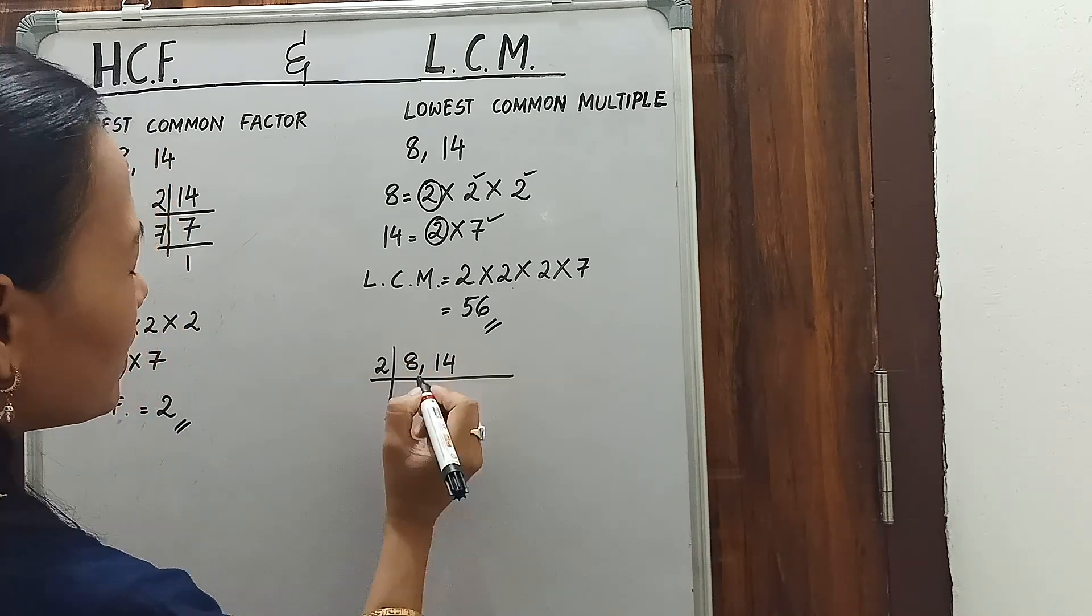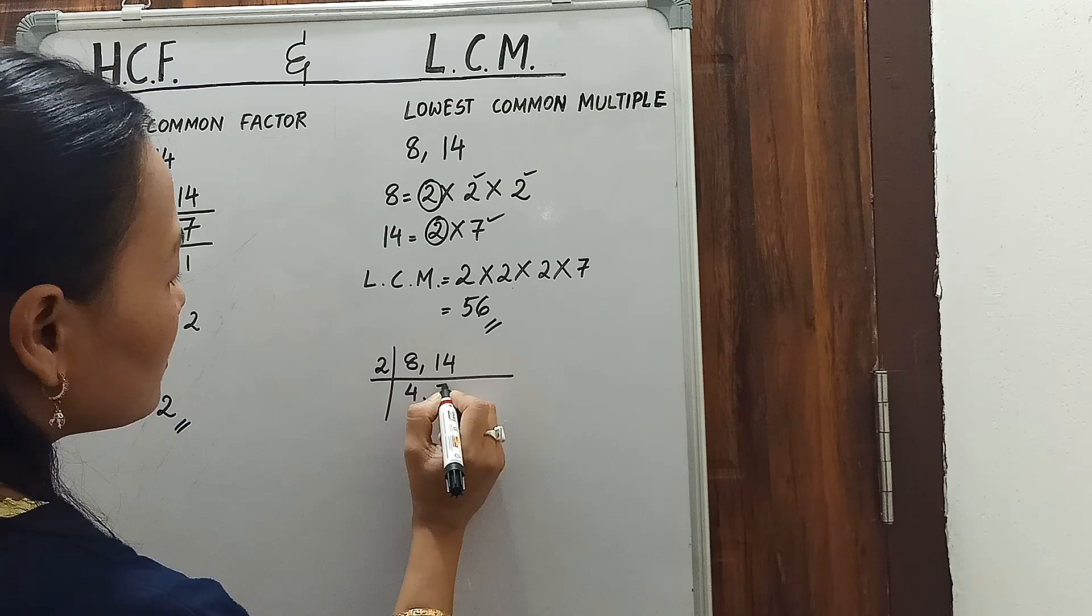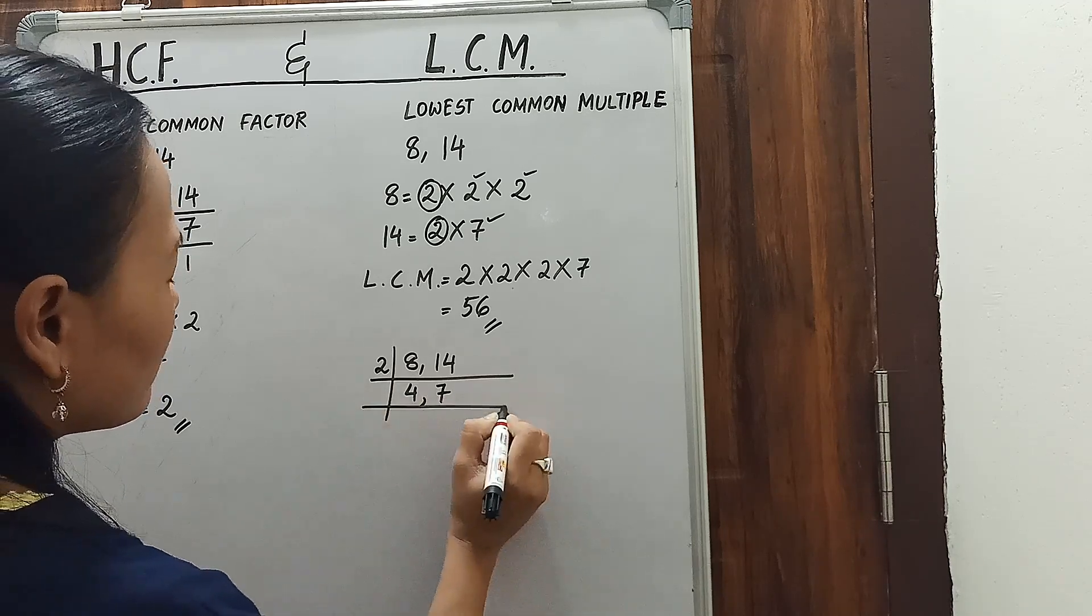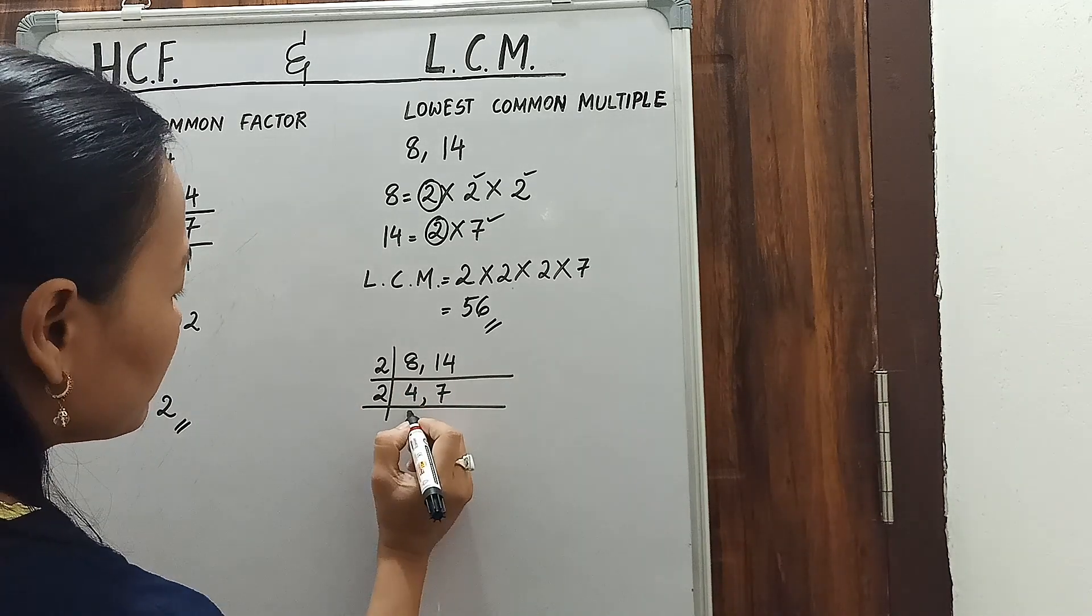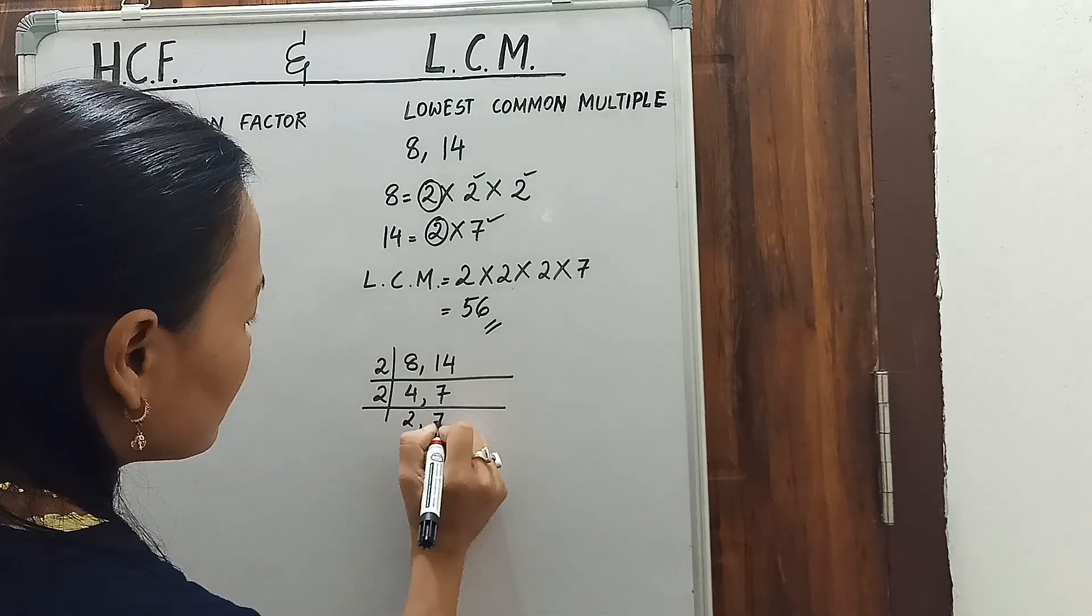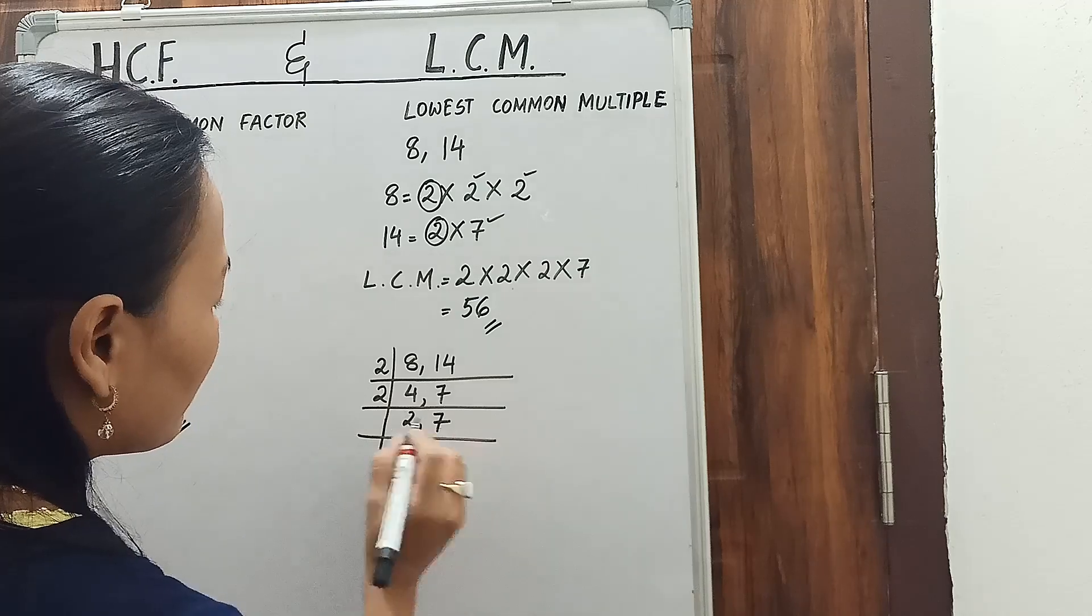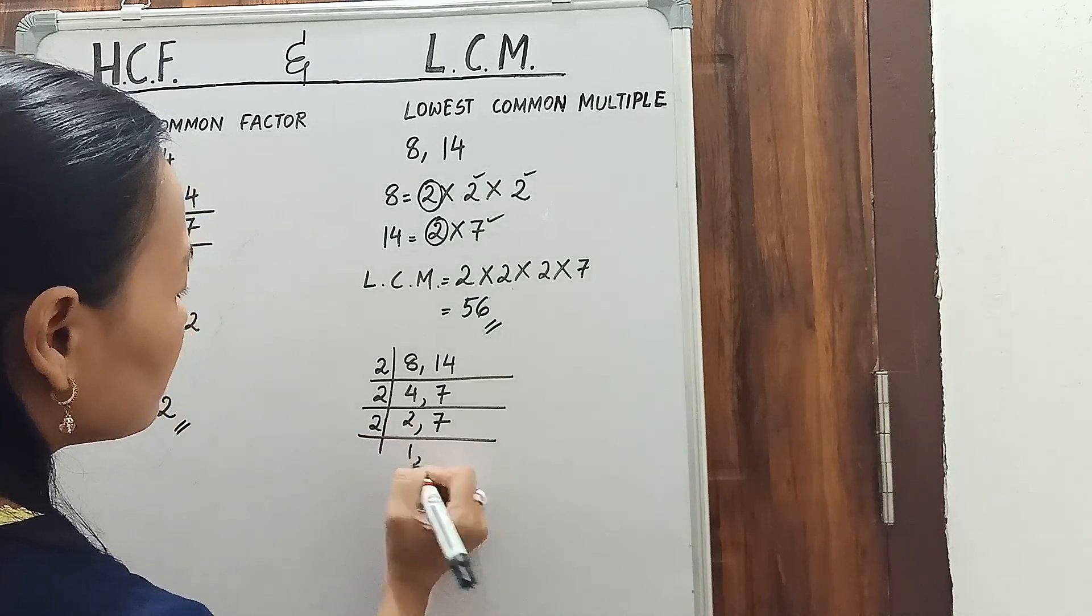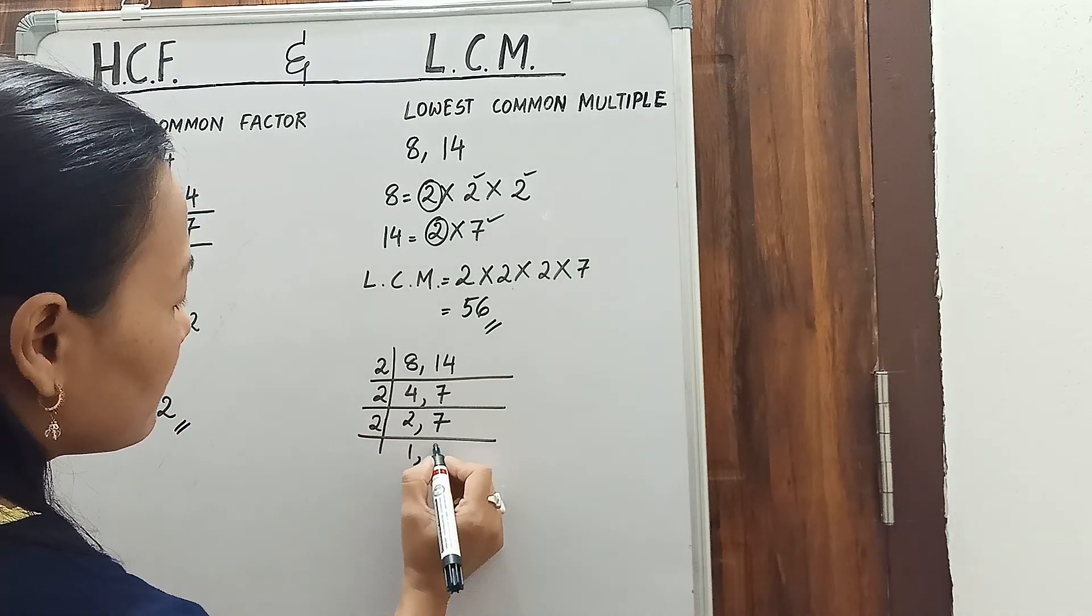We will start dividing by 2. 2 times 4 is 8, 2 times 7 is 14. Again by 2: 2 times 2 is 4, and this 7 you leave as it is because it is not divisible by 2. Again, 2 times 1 is 2, keep the 7 as it is.